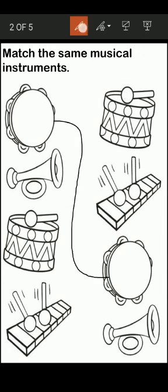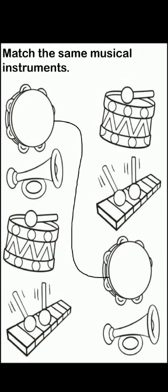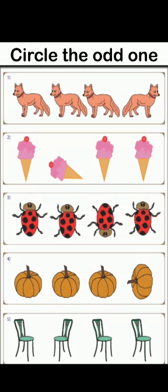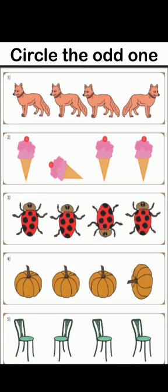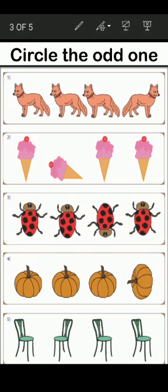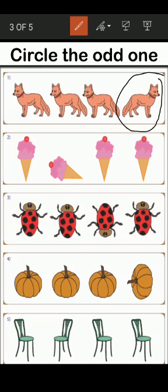Now let's come to the second question, which is: circle the odd one out. We have to find the odd picture and then make a circle around it. The first set shows pictures of a fox. Is this one odd? No. Is this one odd? No. Is this one odd? No — the third one is odd, so we have to circle it like this.